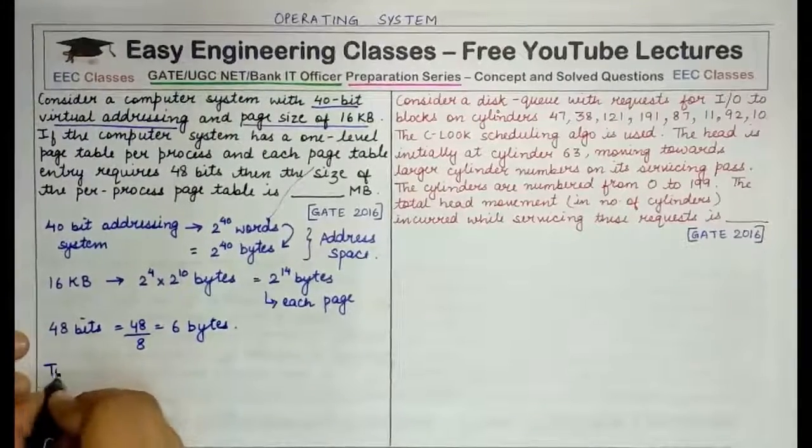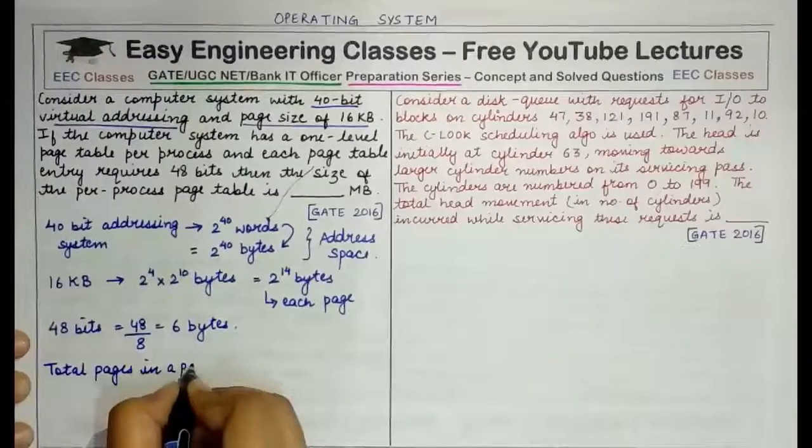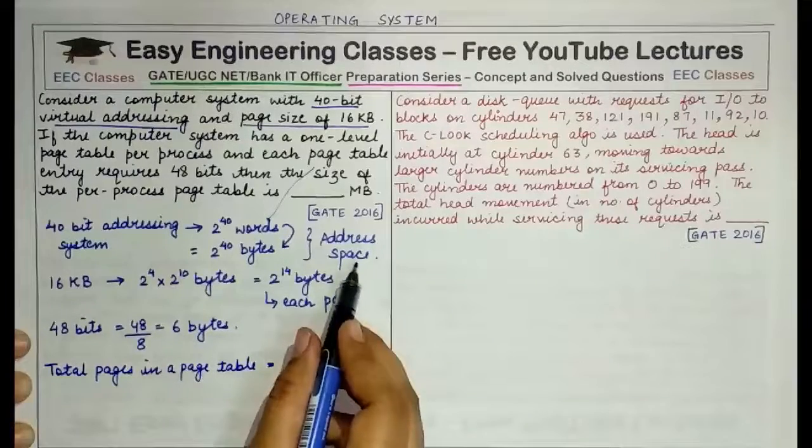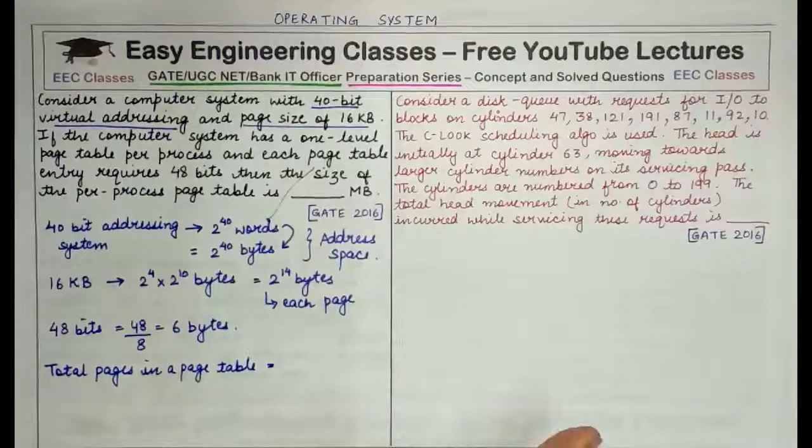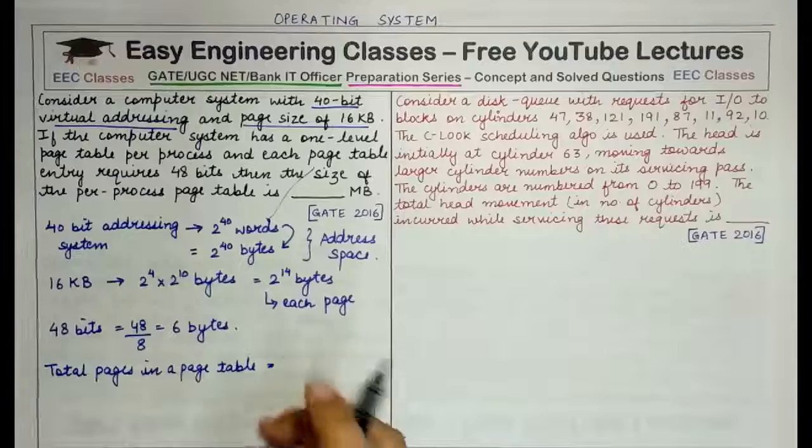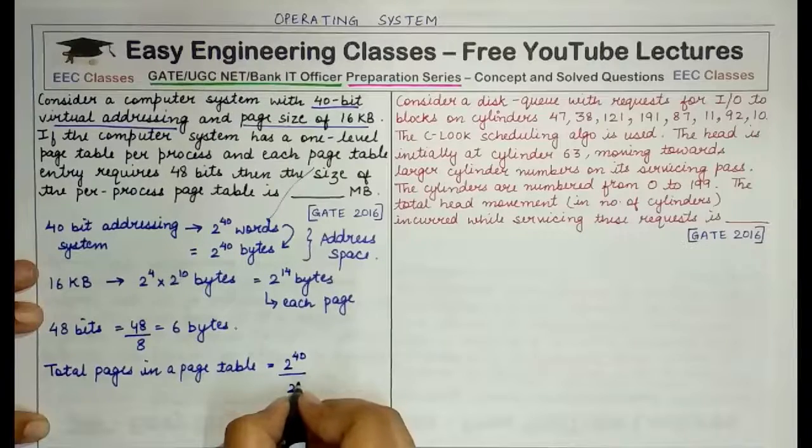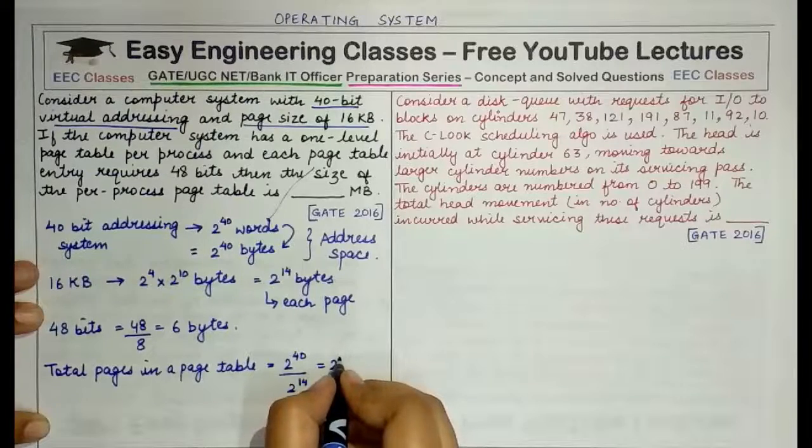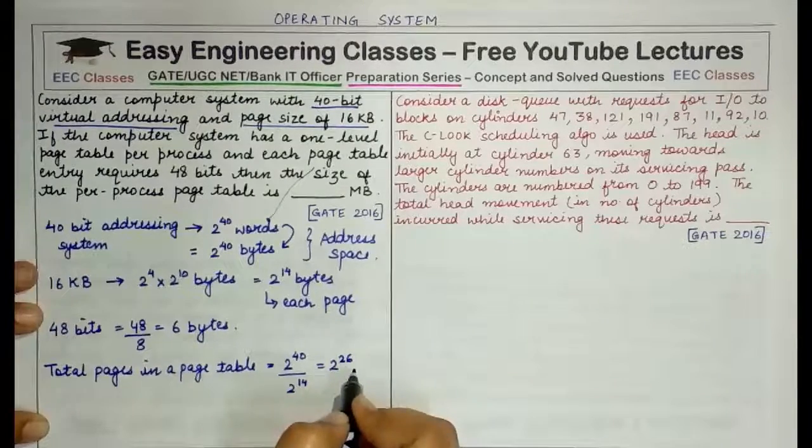Now putting all this information together, the total pages in a page table are given by the total amount of address space that we have divided by the size of each page. If you have a large address space and each page takes a certain amount of space within that address space, you have to divide the total value of the address space, total size per the size of each page. So this comes out to be 2 raised to power 40 divided by 2 raised to power 14 and this value would be 2 raised to power 26.